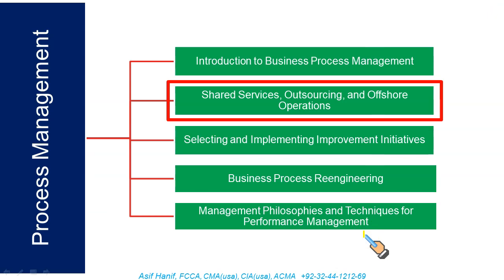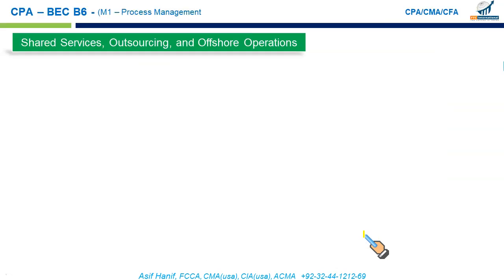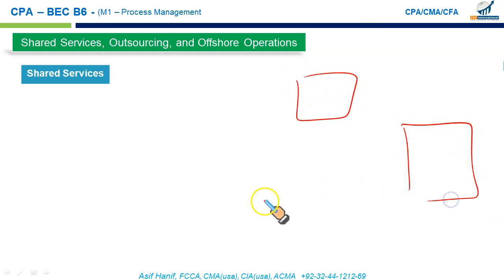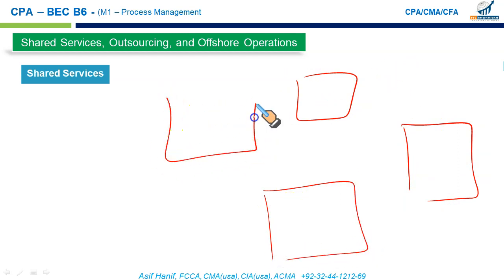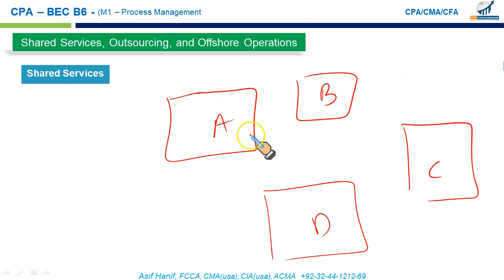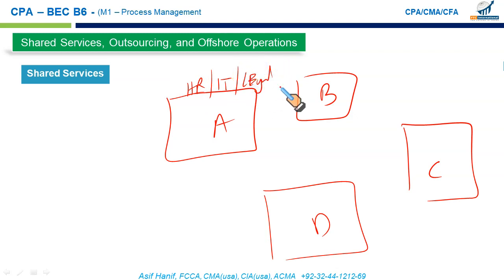The next sub-module is shared services, outsourcing, and offshore operations. Shared services means consolidating duplicated functions. For example, if a bank is split into four regional divisions, each having its own HR, IT, and legal department, that is a significant cost. Why not combine them into a centralized HR, centralized IT, and centralized legal services shared across all four regions to reduce cost?